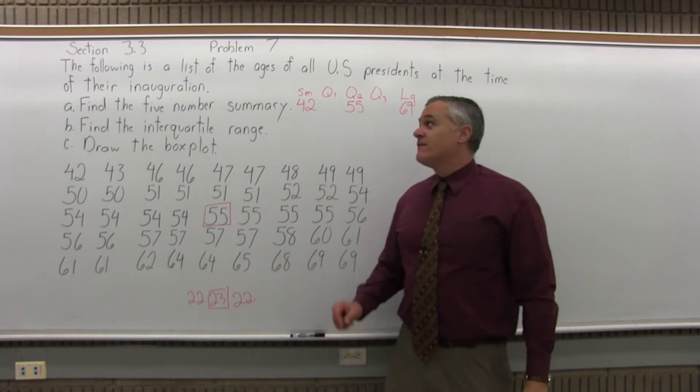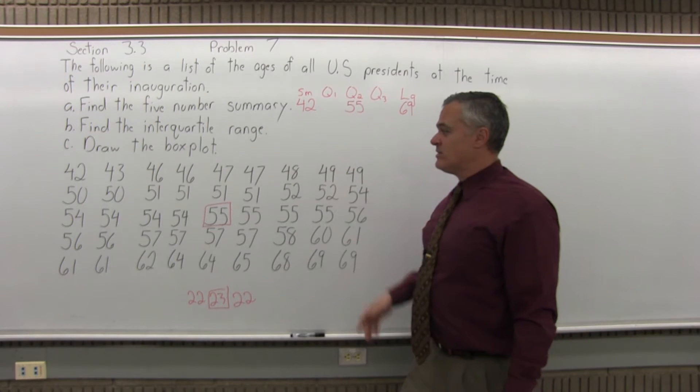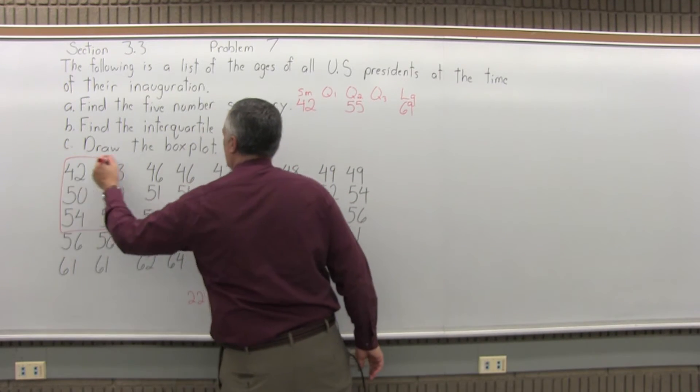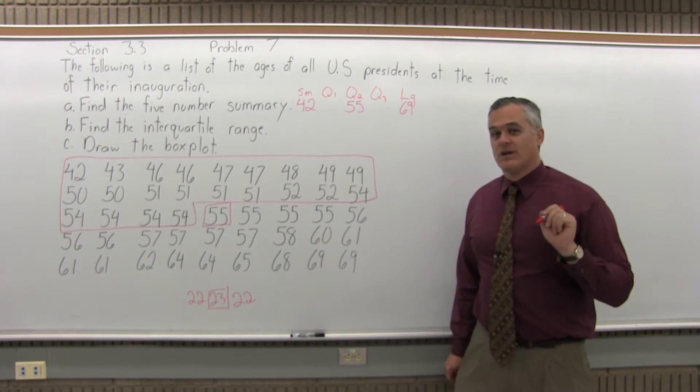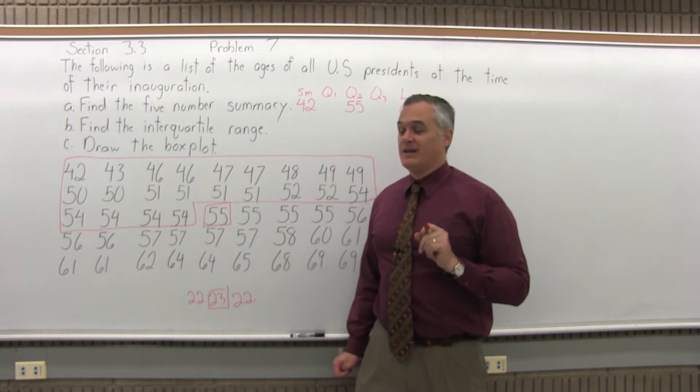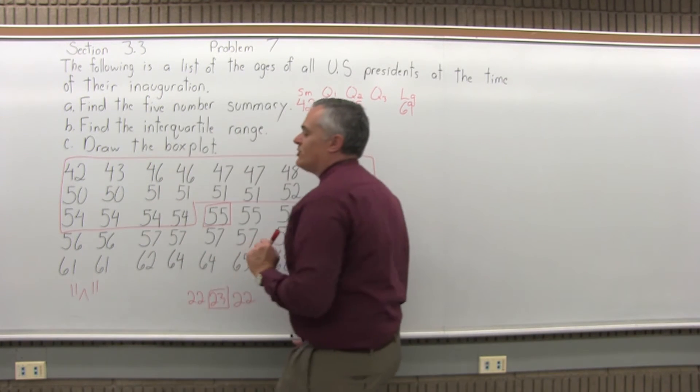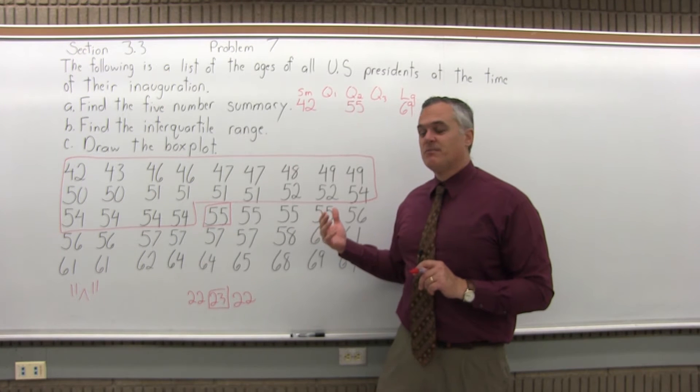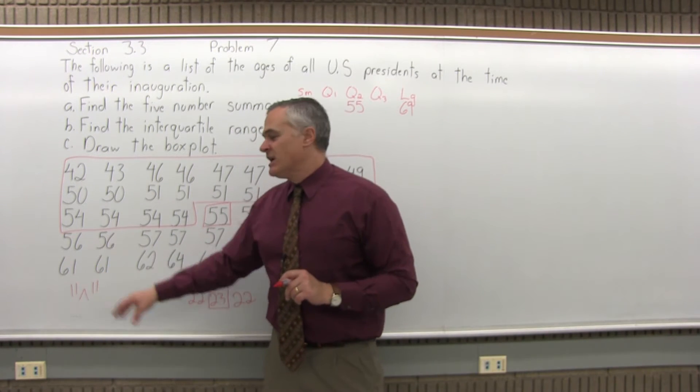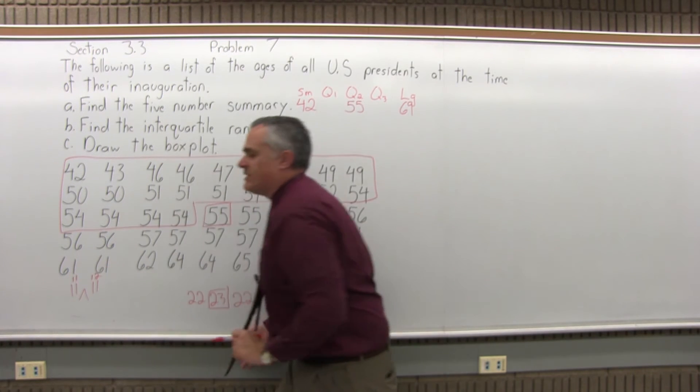Now that I have Q2, I can go back and find Q1. Q1 is the median of the smaller half of the data, not including Q2. So, the smaller half of the data are the 22 presidents that were younger than 55 years old when they were inaugurated. 22 is an even amount of data, so for an even amount of data, the median occurs between the two middle values. There's going to be 11 positions smaller than that midway point, and 11 positions that are bigger. The midpoint will be in the space in between position 11 and position 12.